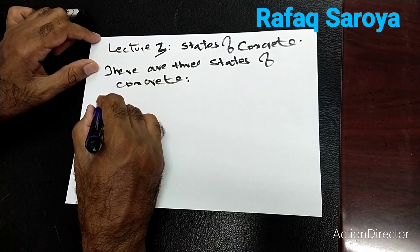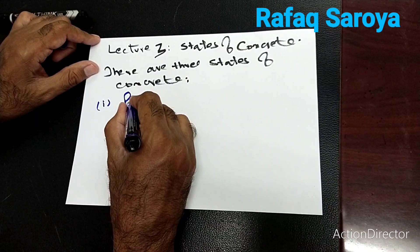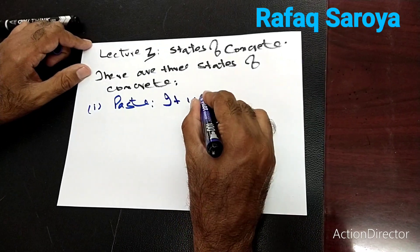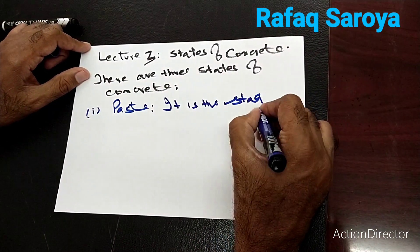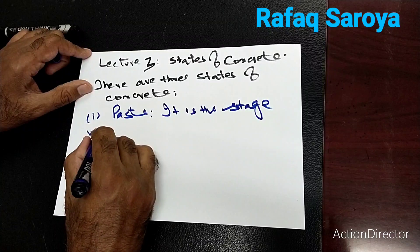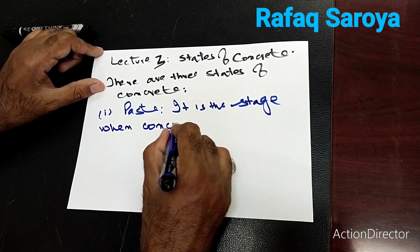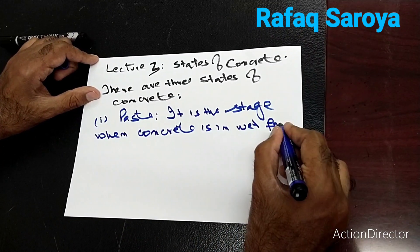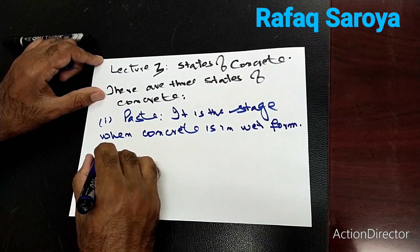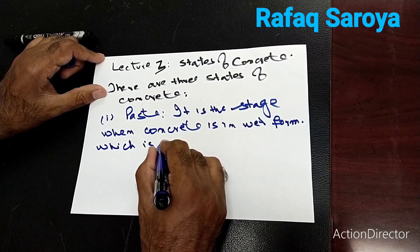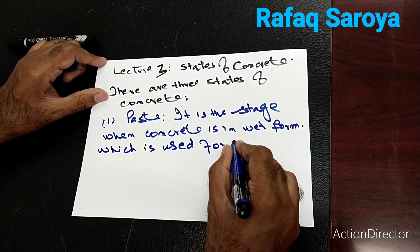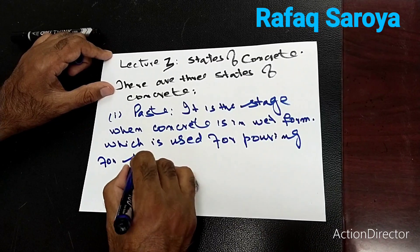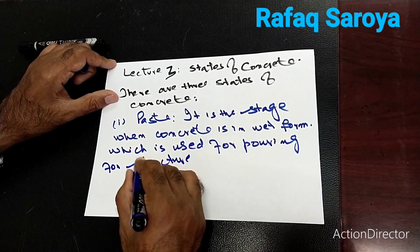The first stage is known as paste. It is the stage when the concrete is in wet form, which is used for pouring into a structure depending upon the project.